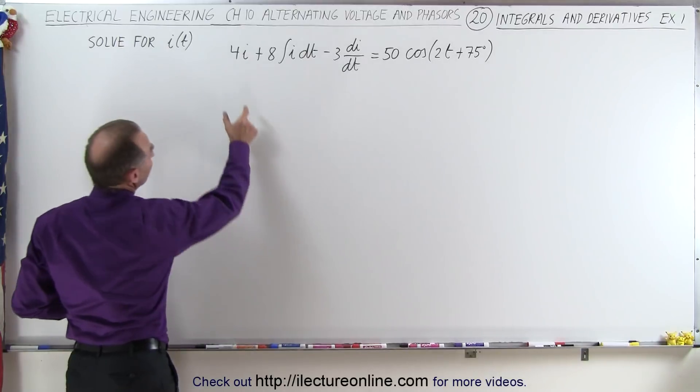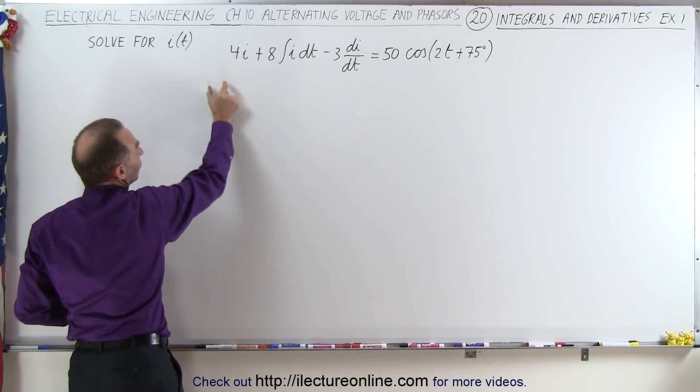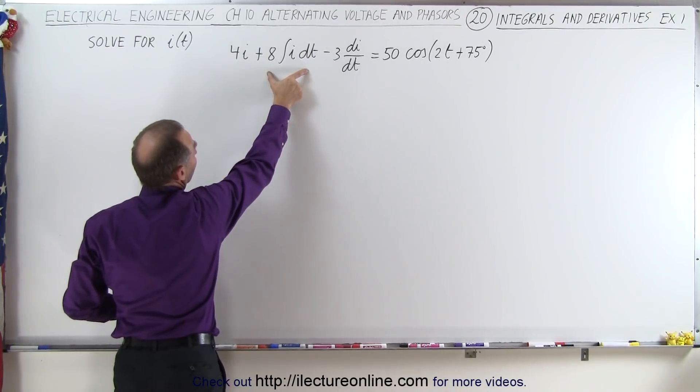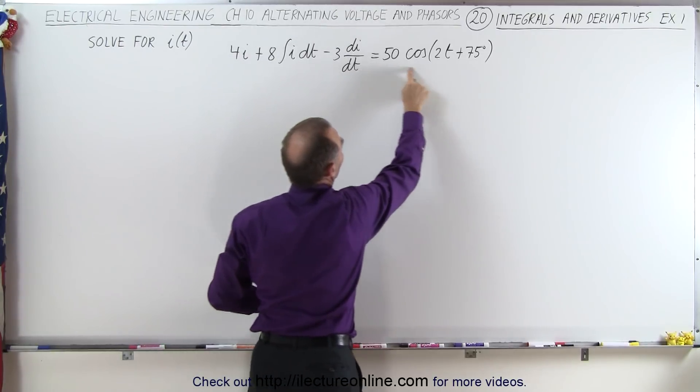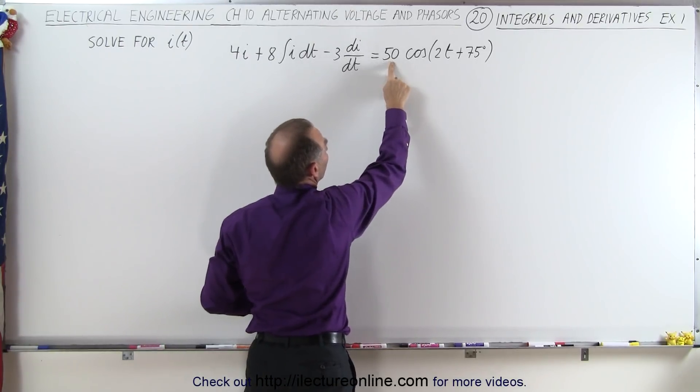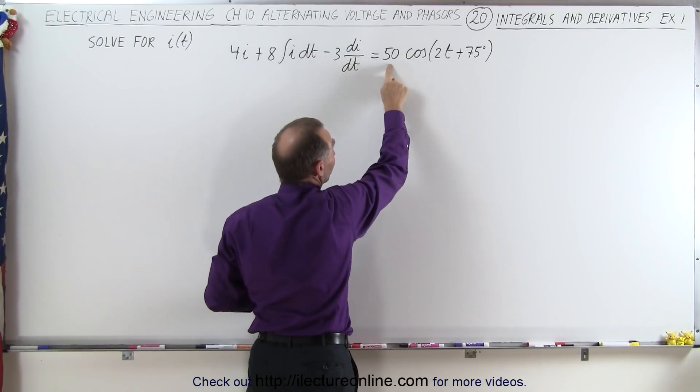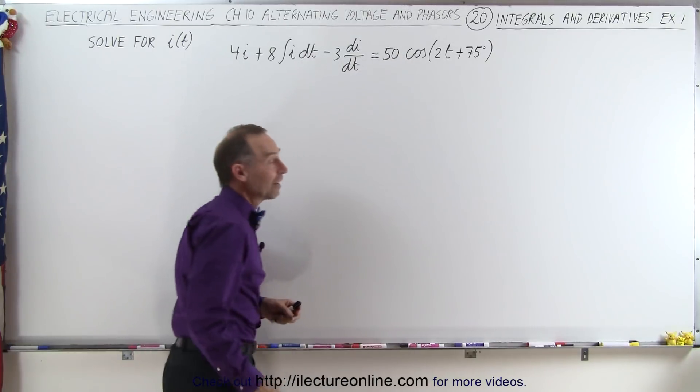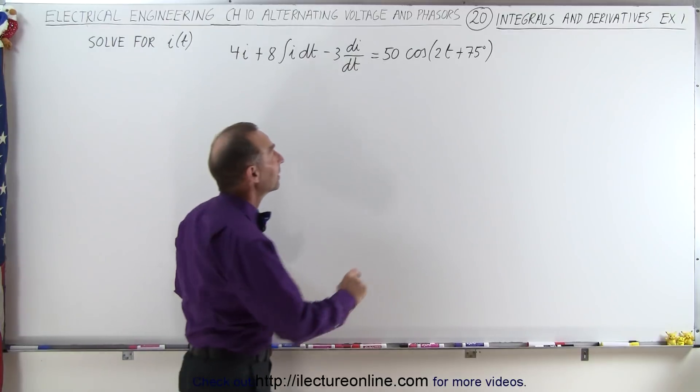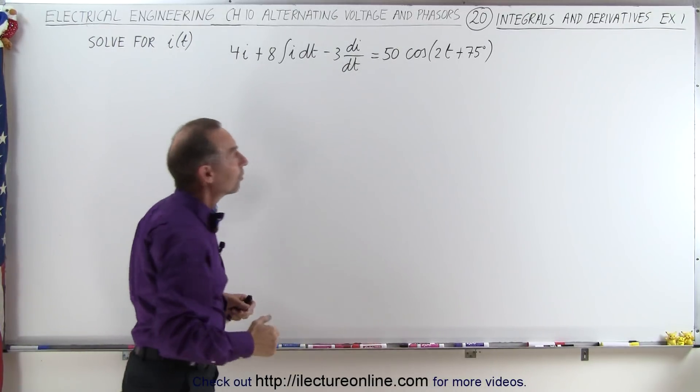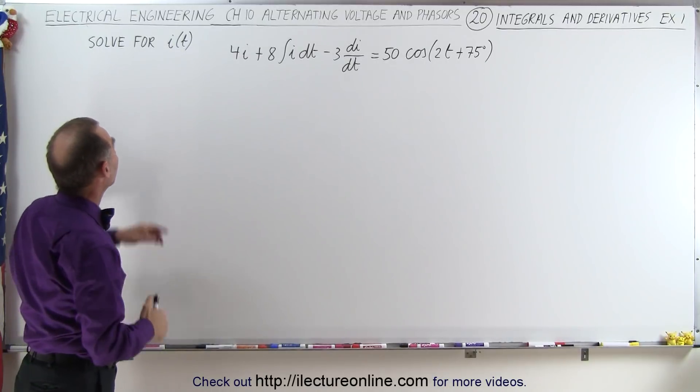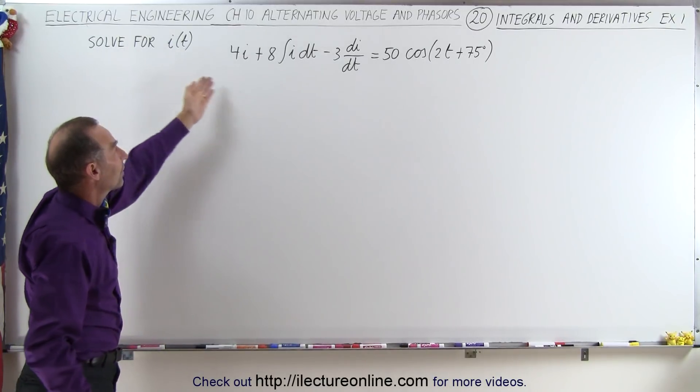And so here you can see that this would be the voltage drop across the resistor, the voltage across the capacitor, and the voltage across the inductor, which would be equal to the voltage source, which has a magnitude or an amplitude of maximum amplitude of 50, and a phase of 75 degrees. Also realizing that the angular frequency is known to be equal to 2. So how do we go ahead and solve for the current as a function of time in the circuit?